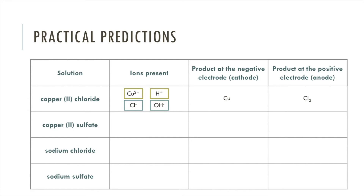Looking at the second example, copper 2 sulfate: the ions are Cu²⁺ and SO₄²⁻, plus H⁺ and OH⁻ from the aqueous solution. At the negative electrode we have a choice between Cu²⁺ and H⁺ — copper is less reactive than hydrogen, so we get copper. At the positive electrode, the negative ions are attracted and we have no halide ion this time, which means we get oxygen.